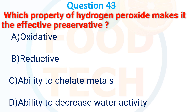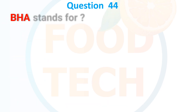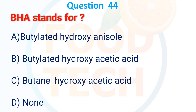Which property of hydrogen peroxide makes it an effective preservative? A. Oxidative, B. Reductive, C. Ability to chelate metals, D. Ability to decrease water activity. The answer is A. Oxidative.